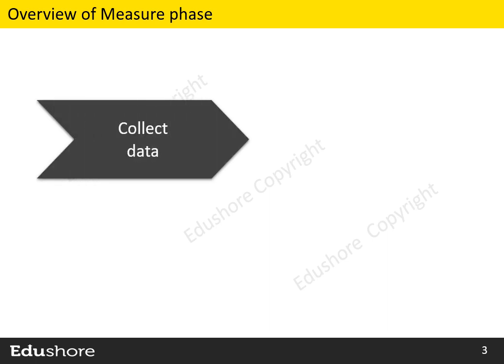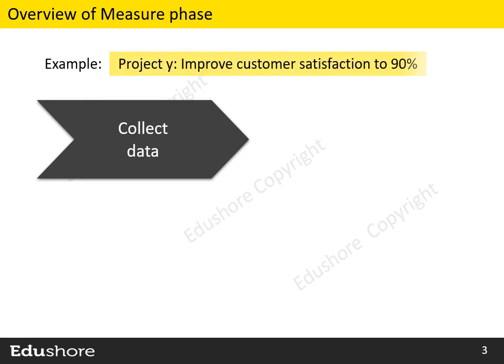The first activity that we do in the Measure Phase is collecting the data. For example, during the Define Phase, we finalize the Project Y as Improved Customer Satisfaction to 90%. In the Measure Phase, we first collect the data on customer satisfaction.